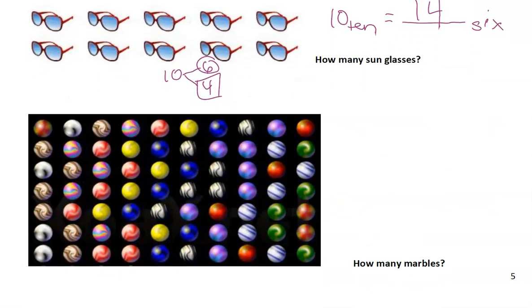Next, how many marbles are there? Let's count 1, 2, 3, 4, 5, 6, 7, 8, 9, 10, and then 1, 2, 3, 4, 5, 6, 7. This is a 7 by 10 in base 10, right? A 7 by 10 in base 10 is 70 marbles in base 10. 70 marbles in base 10 is what in base 6?